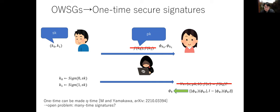Recently we showed that one-time security can be improved to two-time security. But we don't know how to construct many-time signatures: classically, you can sign the public key to extend signatures, but here the public key is a quantum state and it is impossible in general to sign quantum states. So it remains an open problem whether many-time secure signatures can be constructed from one-way state generators.